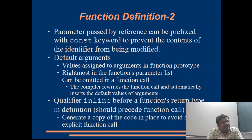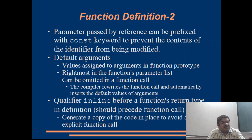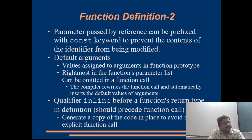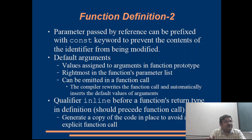Another way to pass parameters is by reference, wherein we pass not the value contained in the identifier but the address of the memory location itself. This has the advantage that the actual contents of that location can be changed if required. But if we do not wish the contents of a location to be modified — even inadvertently — we can prefix that reference argument with a const qualifier. That is a good programming practice.